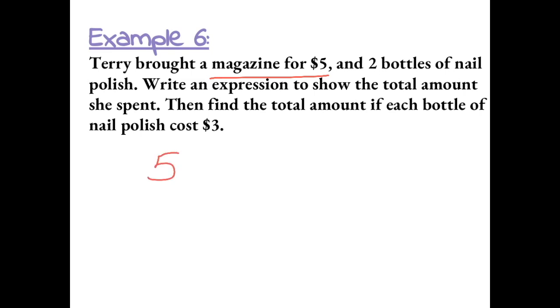So part of her total cost is $5. Then, she bought 2 bottles of nail polish, but we don't know how much the nail polish costs yet. So we're going to label the bottles of nail polish, or the cost of them, as N.